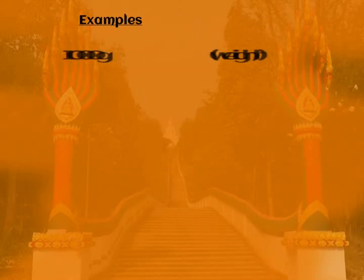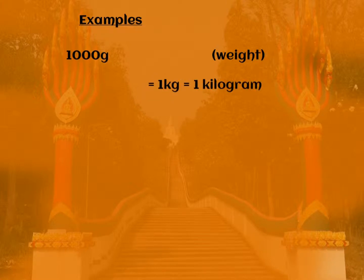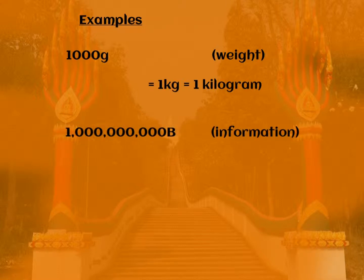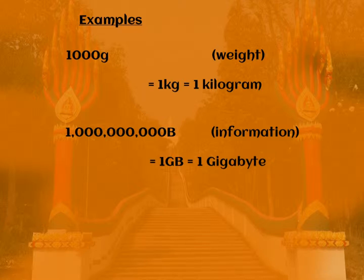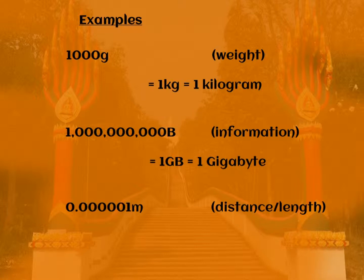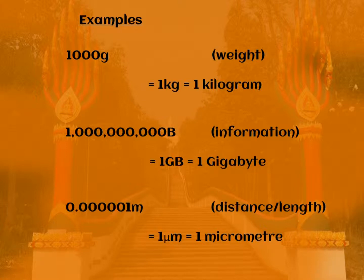Let's look at some examples. One thousand grams of weight would be one kilogram. What about one billion bytes of information? You've probably heard this word before — it is one gigabyte of information. And for a small one: 0.000001 metres of distance would be one micrometre of length — that's minus six orders of magnitude.